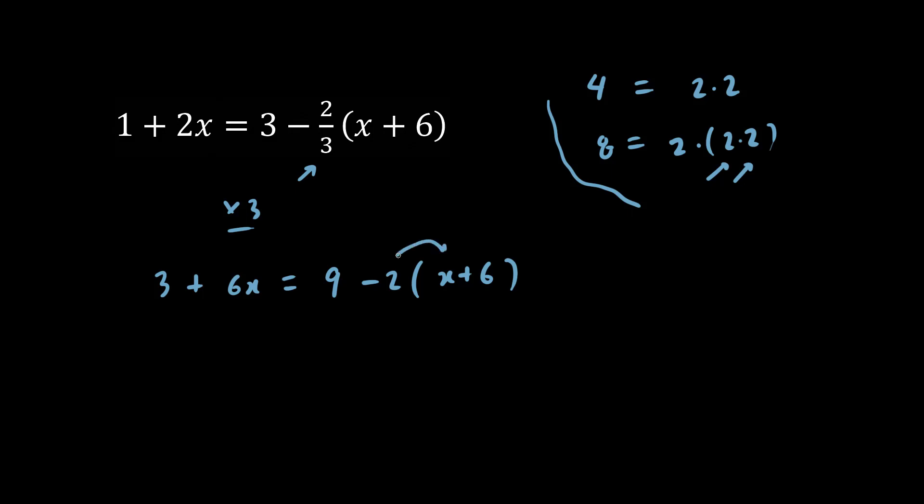Now let's use distribution. Let's feed the dog and feed the cat. So this part here becomes minus 2x minus 12, and we copy down this 9 here, and let's copy down the rest. We have 3 plus 6x.